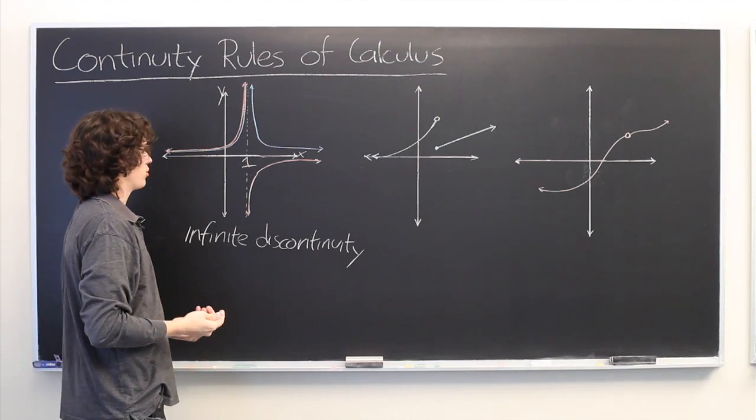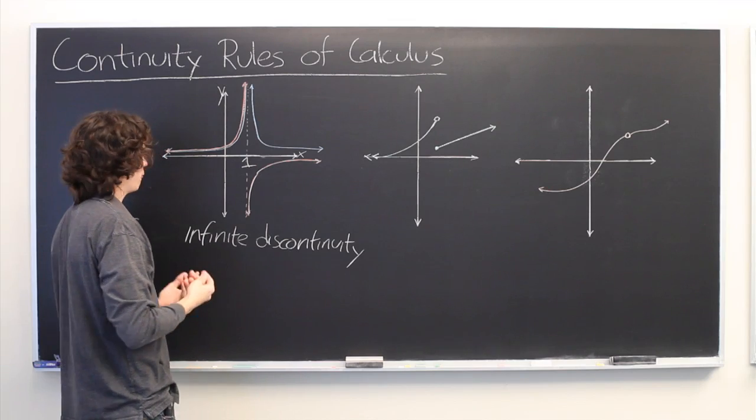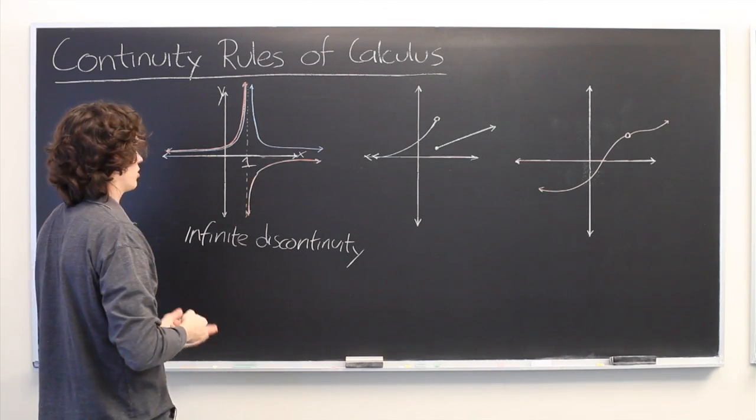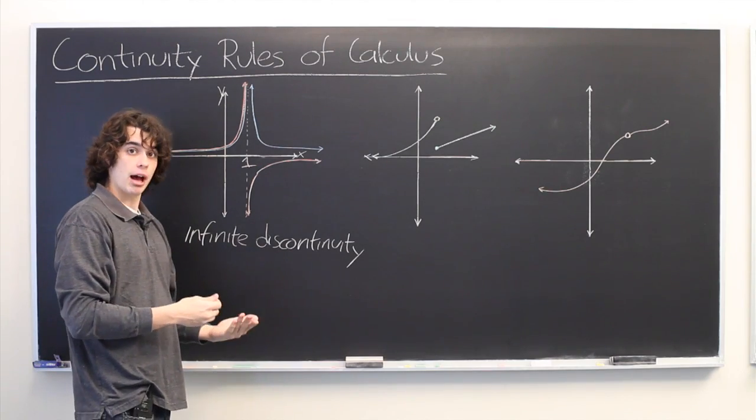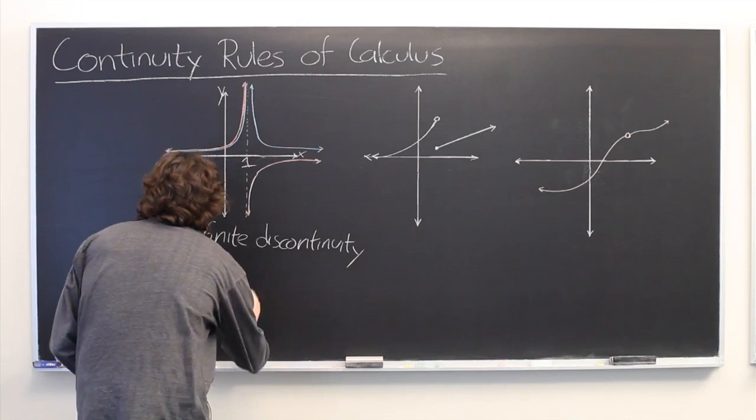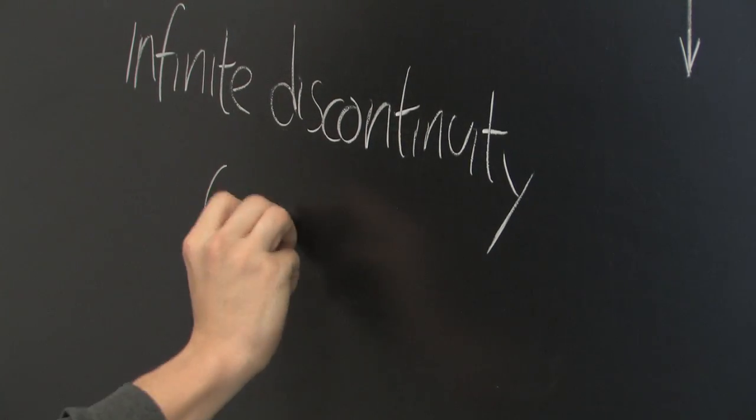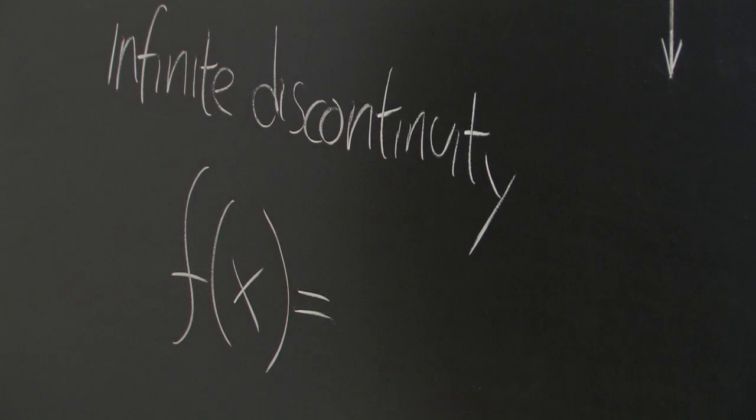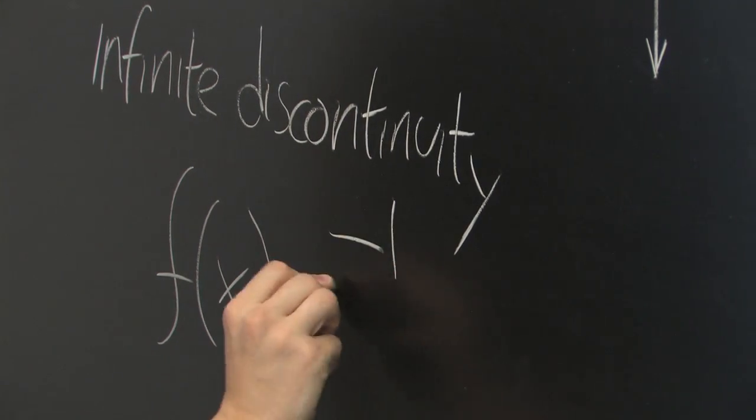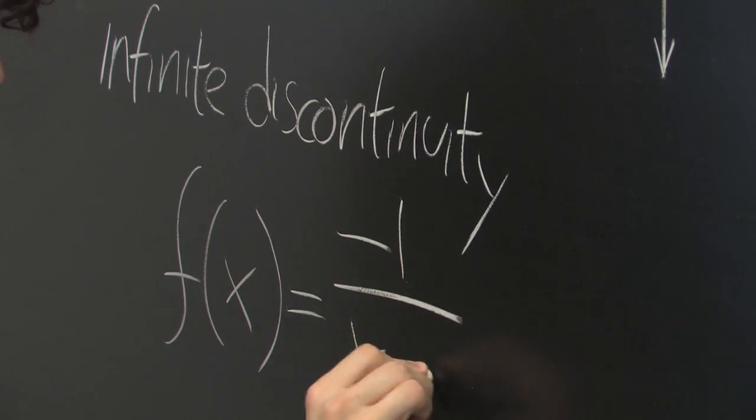So what can cause this sort of discontinuity? It frequently takes place when there is a function of x in the denominator of a function. For example, for something like this, we might have f of x equals, let's say, negative 1 over x minus 1.